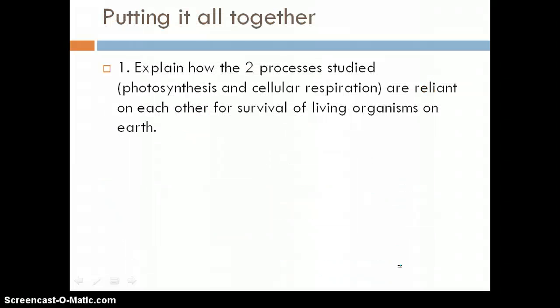So if we put it all together, how the two processes studied are reliant on each other for survival of living organisms on Earth. Without photosynthesizers, we cannot have other living things. But without other living things, photosynthesizers would eventually die off as well because they need that carbon dioxide. So it is a continual process. We need photosynthesis and we need cellular respiration for living things on Earth.